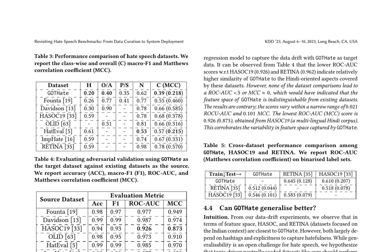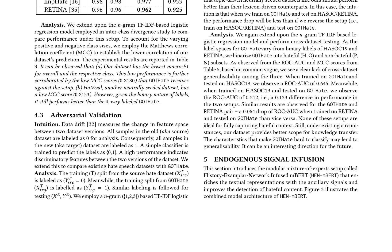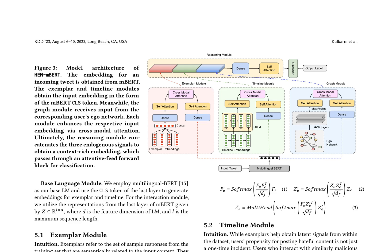The research compares the performance of various hate speech datasets, including GOT Hate, Founta, Davidson, HASOC-19, OLED, HAT-Eval, IMPHATE, and Retina. The analysis shows that GOT Hate has the lowest macro F1 and Matthews Correlation Coefficient (MCC) scores among the datasets, indicating a challenge in classifying hateful content. Adversarial validation is also performed to compare existing datasets with GOT Hate, showing a narrow range of ROC-AUC and MCC scores, suggesting varying feature spaces.